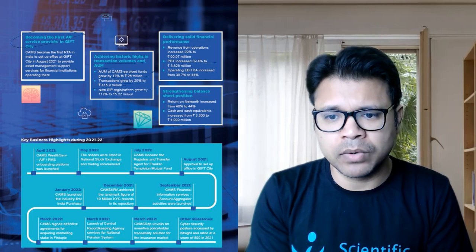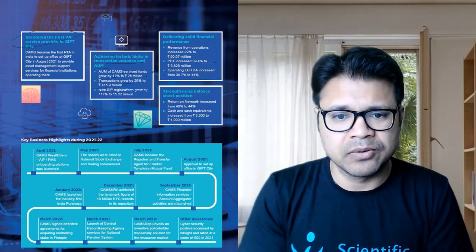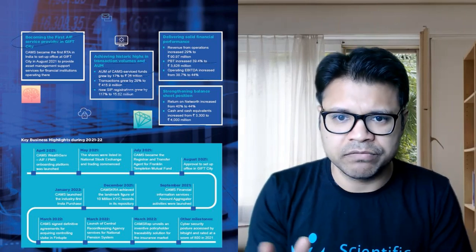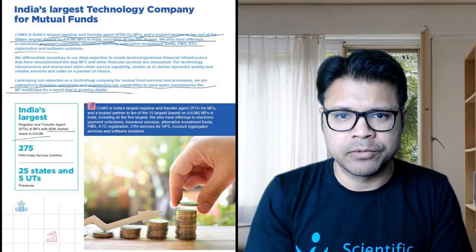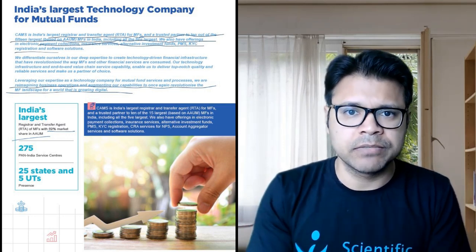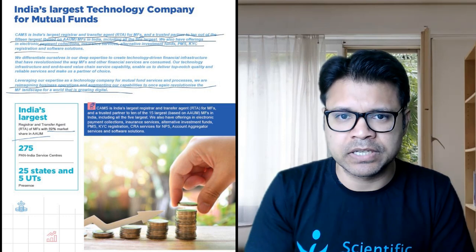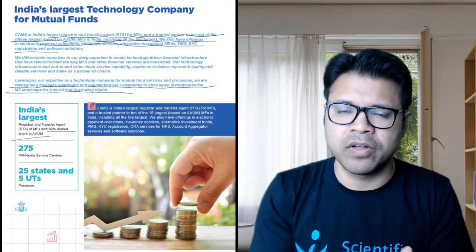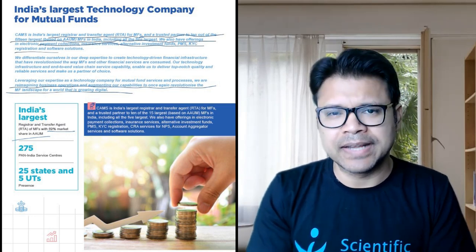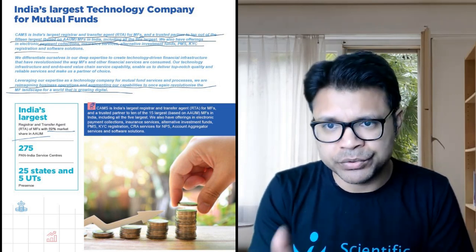They have also given key highlights month by month, giving a fair idea of what business they are in, which sector, what kind of profit they have made, and what activities they undertook during the year. Moving to page four, it says CAMS is 'India's largest technology company for mutual funds.' Two words are very important here: the customers are mutual funds, and we know how mutual funds are growing with the financialization of savings. They call themselves a technology firm, and we know the future of technology looks bright — so they serve a growing industry.